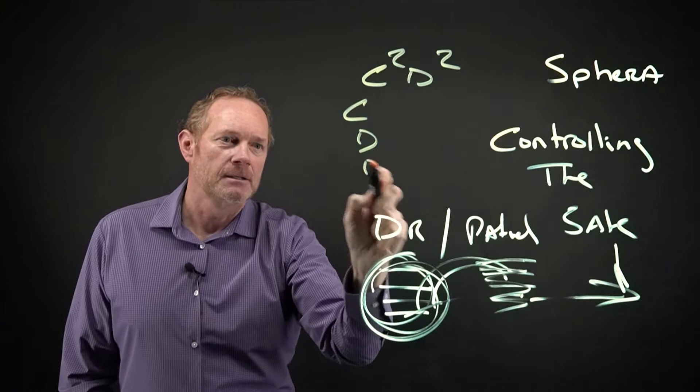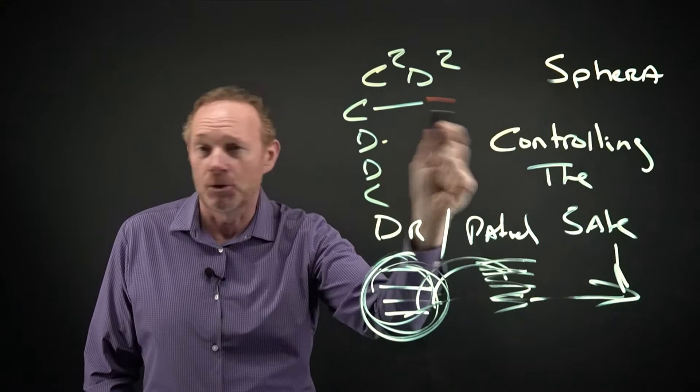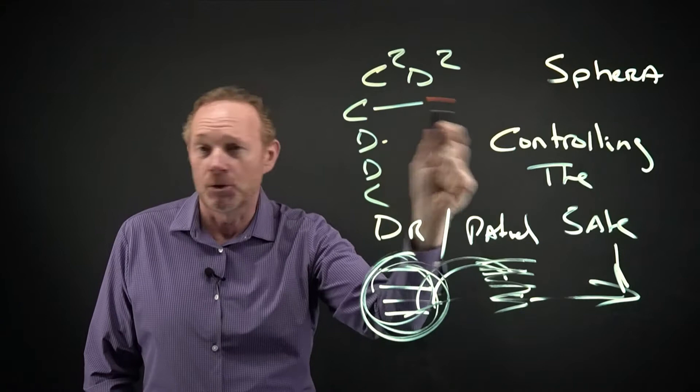C2D2 stands for Connect, Discover, Deliver, and Close. The connect part's really simple—that's just about likability, building rapport, talking about everything from the weather to sports, it's just a connection. The discovery part is two types of questions: strategic questions about their business, but then technical questions about how they buy.